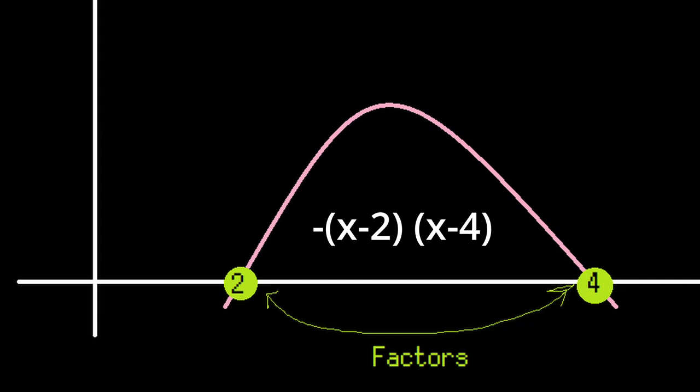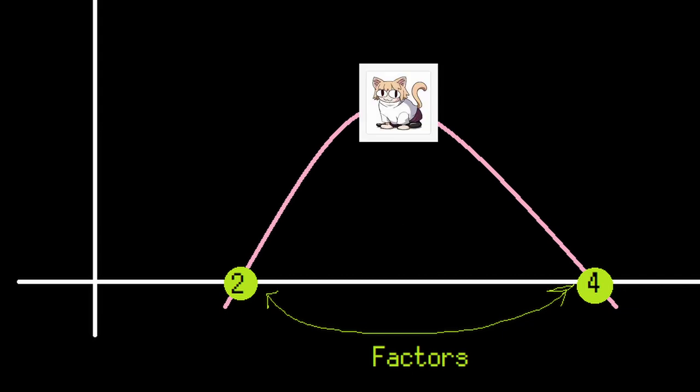That demonstration doesn't work. Another way to think about it is using the cat I mentioned earlier. If at the origin we cannot hear the cat, then if we move towards the cat in steps, the lower value of the factored form would be when we first hear the cat, and the higher value would be when we stop hearing the cat.